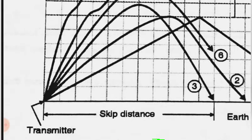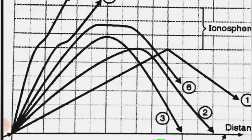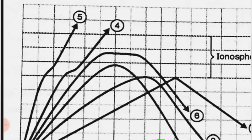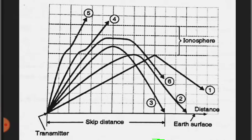For angles of incidence much less than that of ray 3, rays 4 and 5 cannot return back to the earth's surface. They go into the ionosphere layer, so their skip distance cannot be determined.